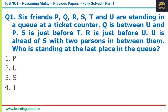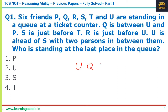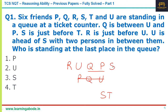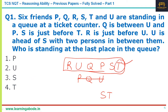The first question is a linear arrangement question. There are six people standing in a queue. Q is between U and P, so we can write U-Q-P or P-Q-U — both are possible. S is just before T. R is just before U, so only U-Q-P is valid. U is ahead of S with two persons in between, so Q and P are between them. The arrangement is: R, U, Q, P, S, T. The question asks who is standing at the last place — the answer is T, answer option 4.